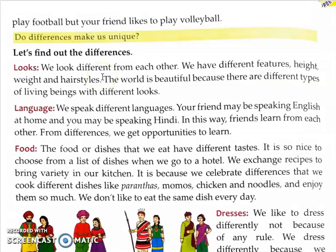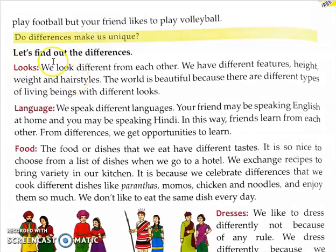We are all different. Now we will see the differences. Let's find out the differences. Looks — we look different from each other. We have different features: height, weight, and hair styles. The world is beautiful because there are different types of living beings with different looks.